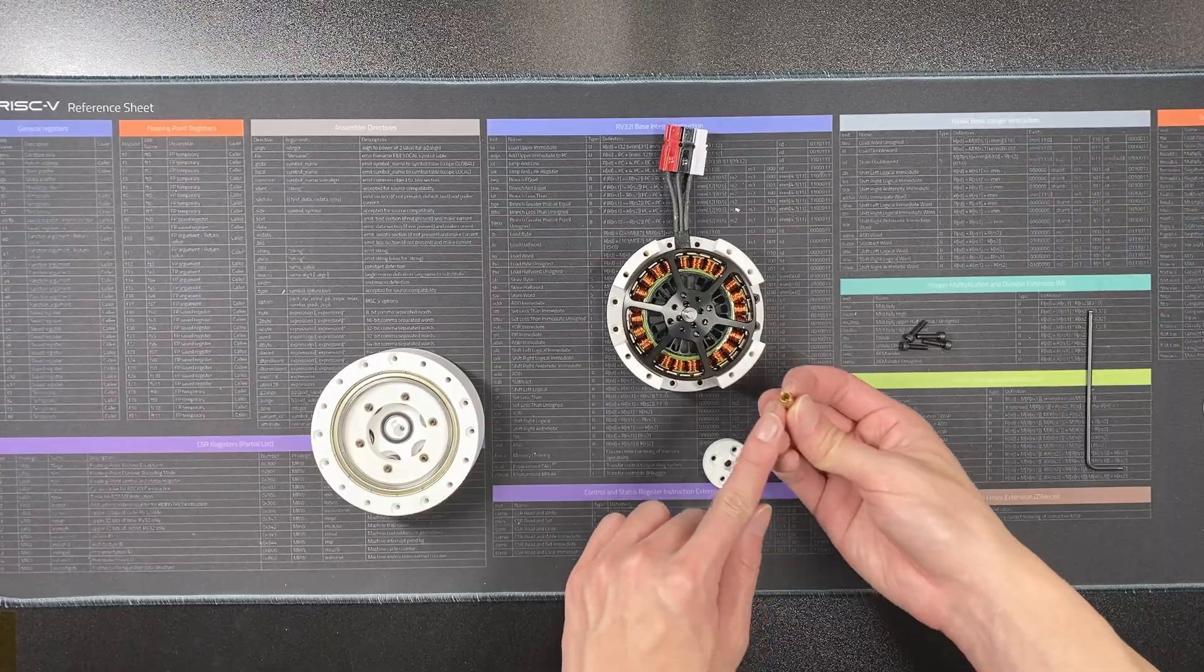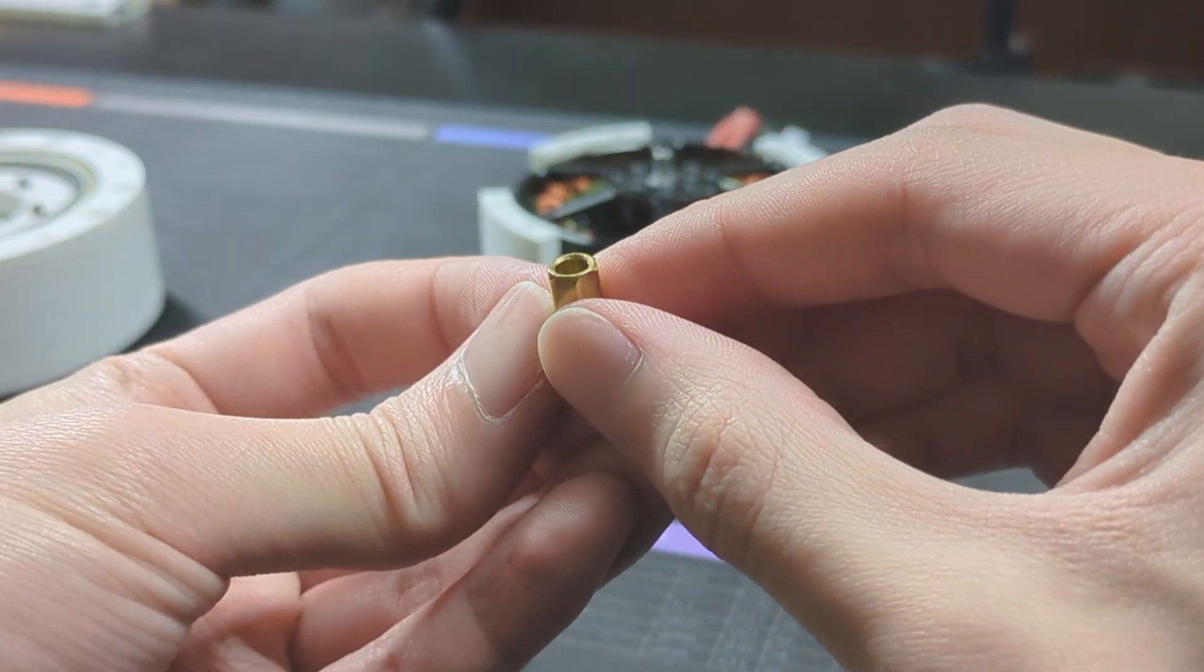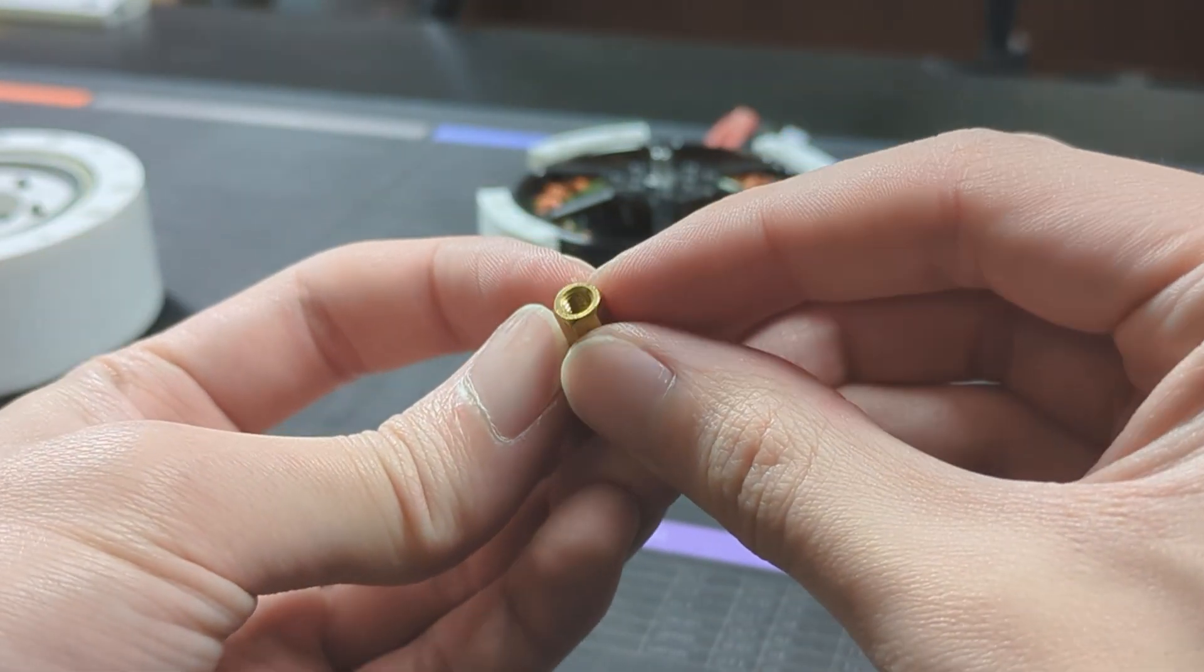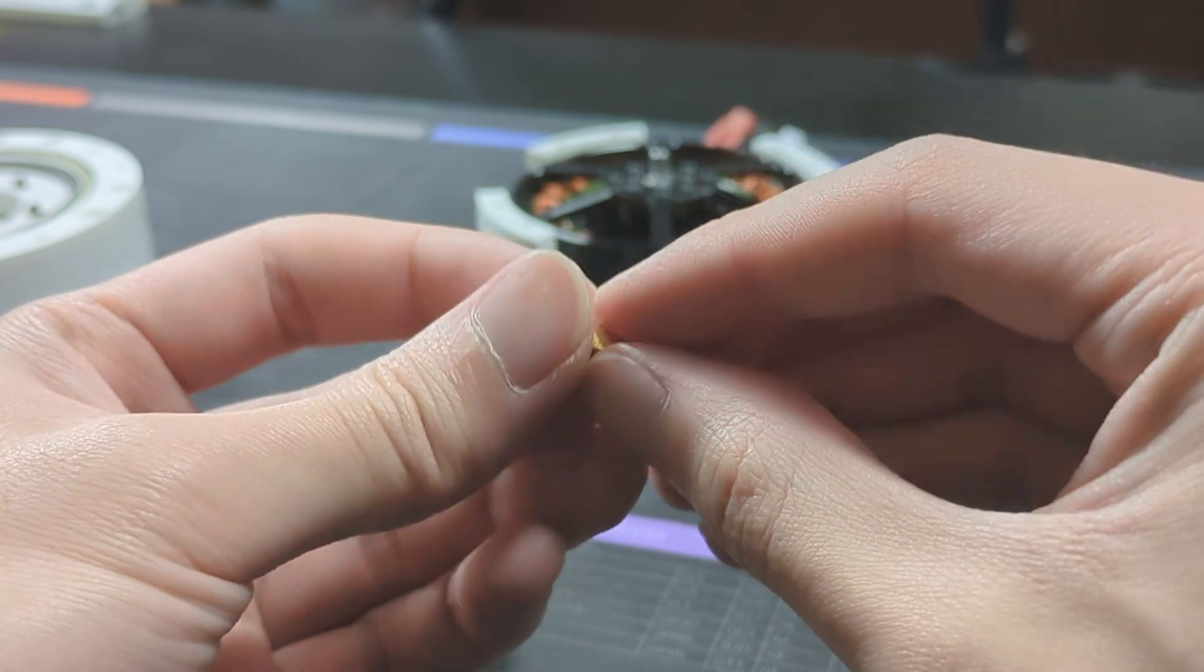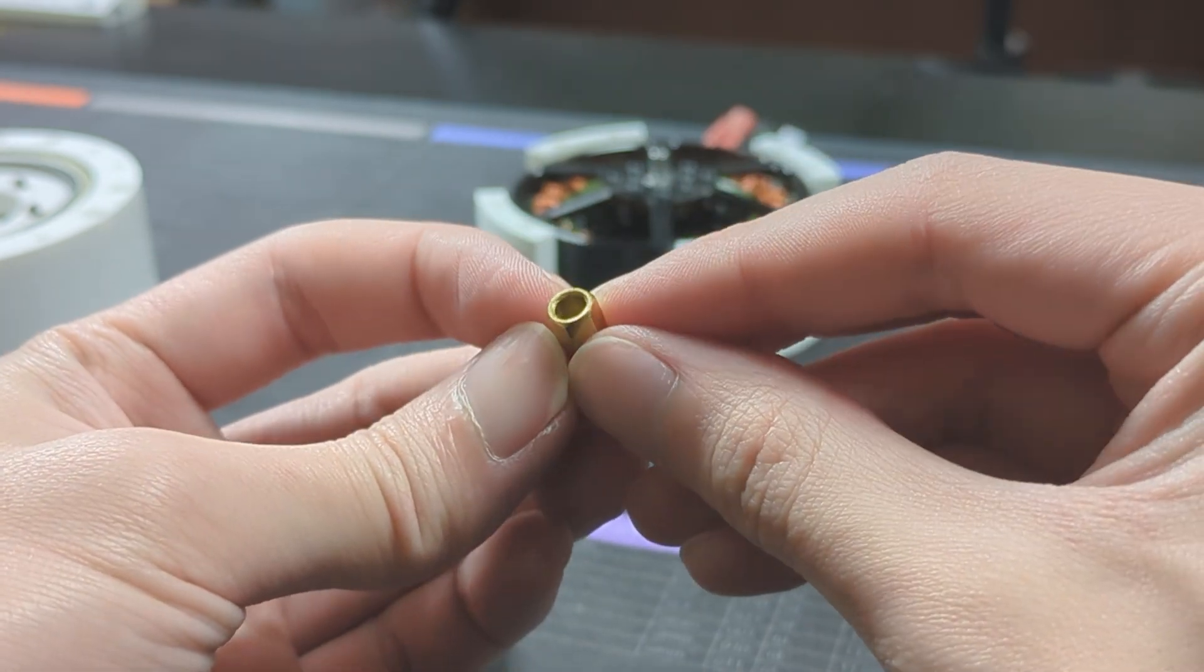Attach the input shaft stiffener. The inner diameter of some hex stands are too narrow, so we might need to use a drill to enlarge the opening.